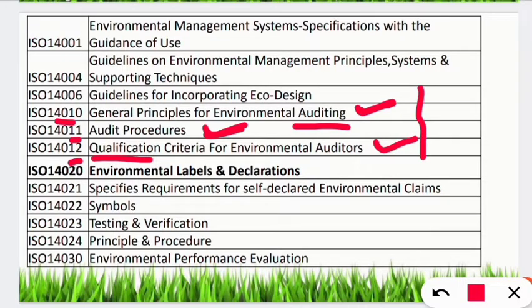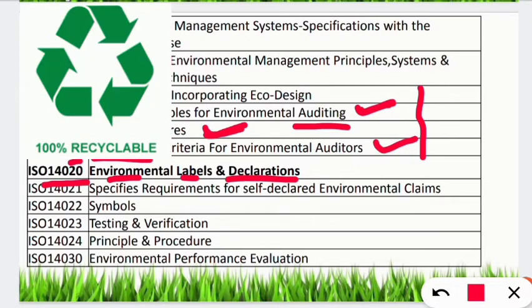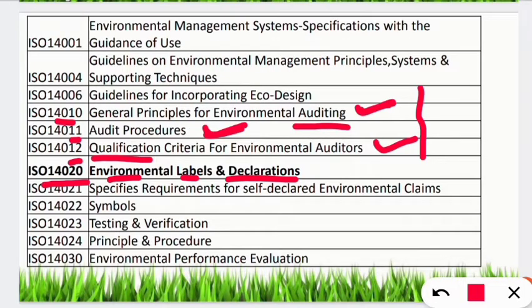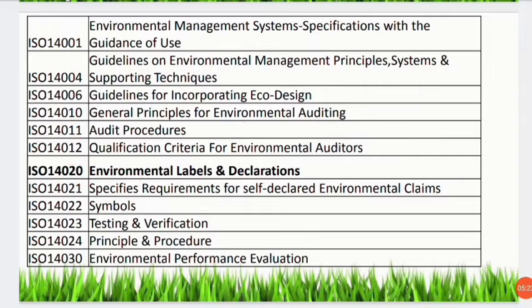Now ISO 14020. This series deals with environmental labels and declarations. Labels include recycling labels and eco-friendly labels — the different logos and labels found on products. All these labels and declarations come under the ISO 14020 series. Remember, this series is for eco-labeling.